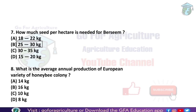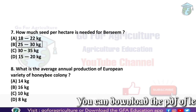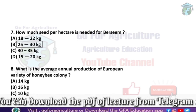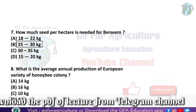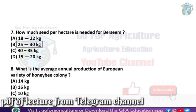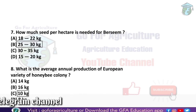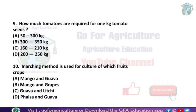Next: what is the average annual production of the European variety of honeybee colony? This is a most important question and the answer is 10 kg. So 10 kg is the annual production of the European variety of honeybee colony.